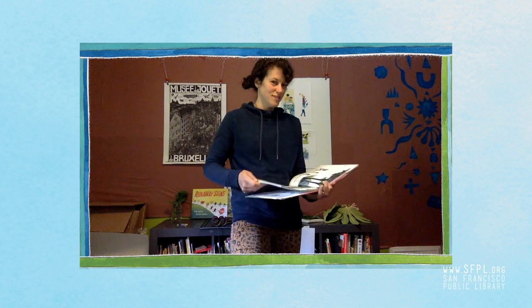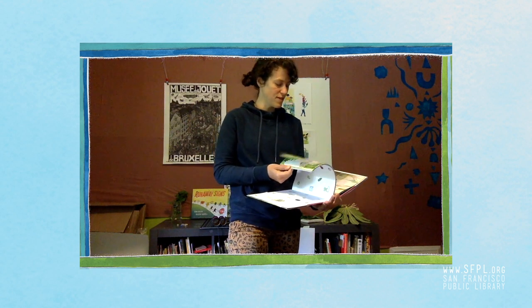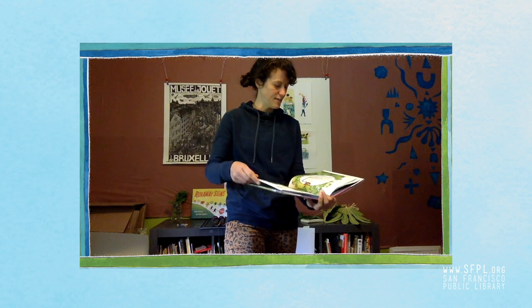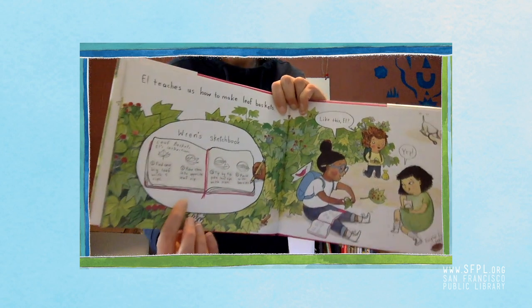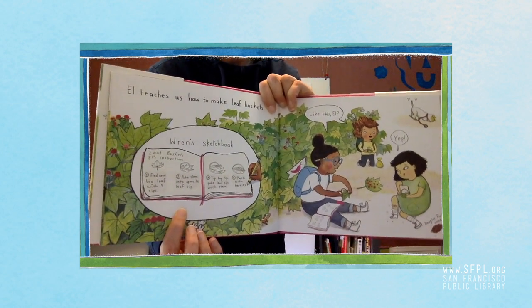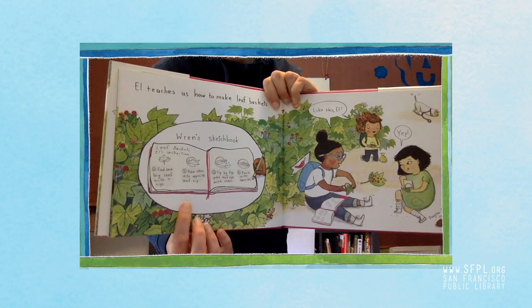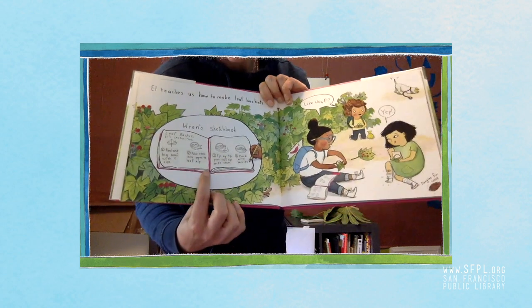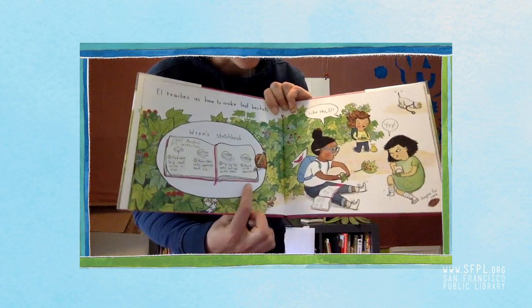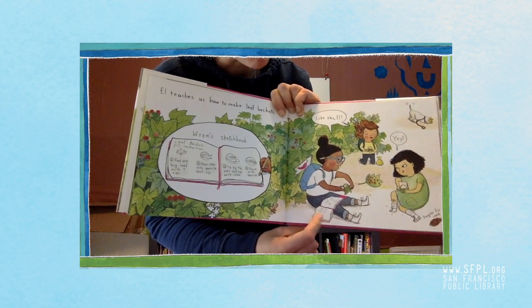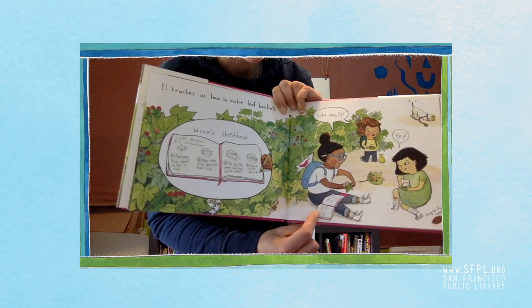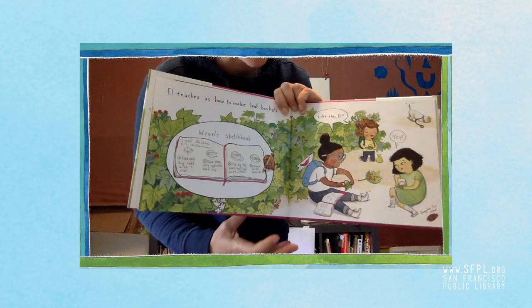She uses the sketchbook to make drawings of some of the things she sees and does in the hike, and you can see little cutouts in the book that show this. Here's Wren's sketchbook and she's drawing instructions for how to make leaf baskets here, and if you look closely over here you can see Wren with her sketchbook in her lap as she's making a leaf basket.